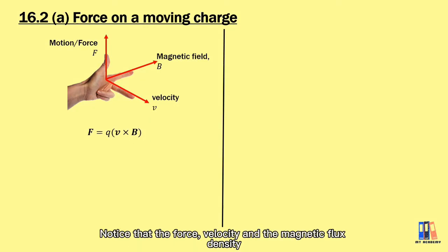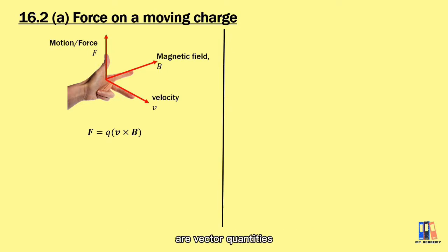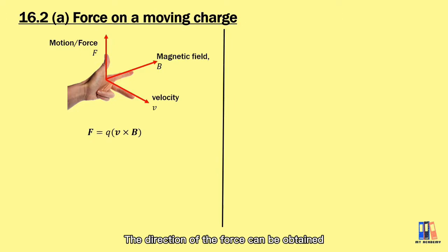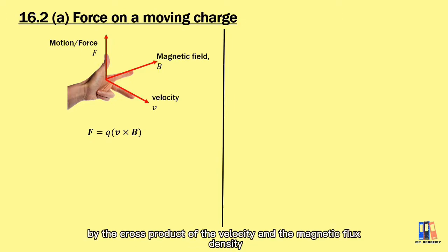Notice that the force, velocity, and magnetic flux density are all vector quantities. The direction of the force can be obtained by the cross product of the velocity and the magnetic flux density.